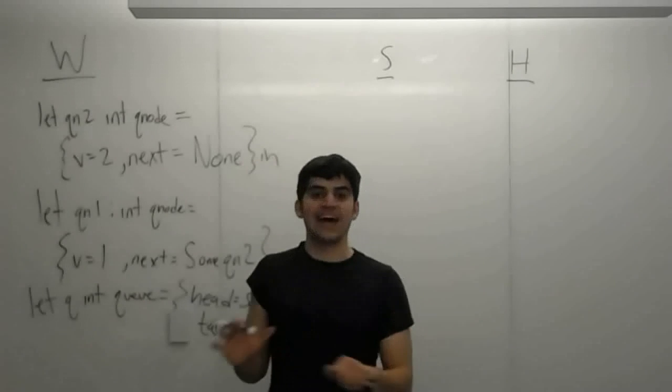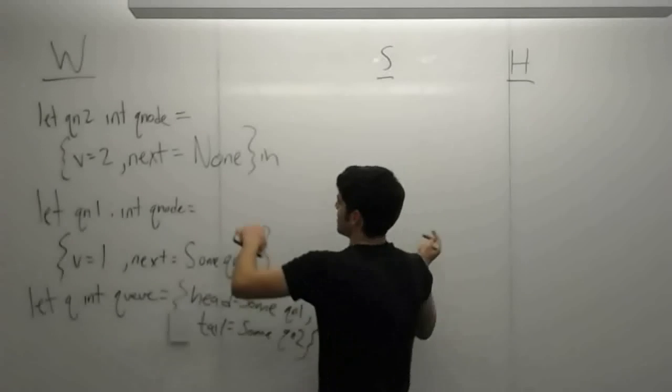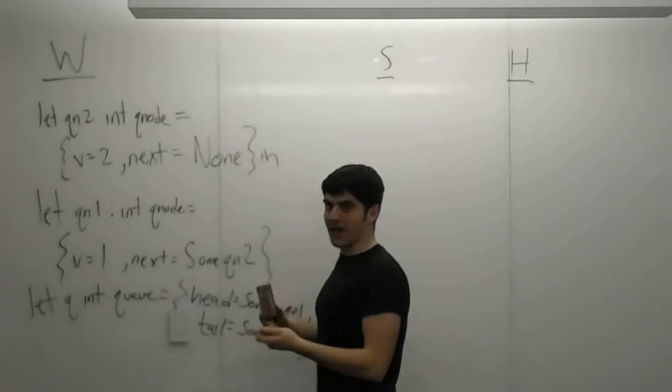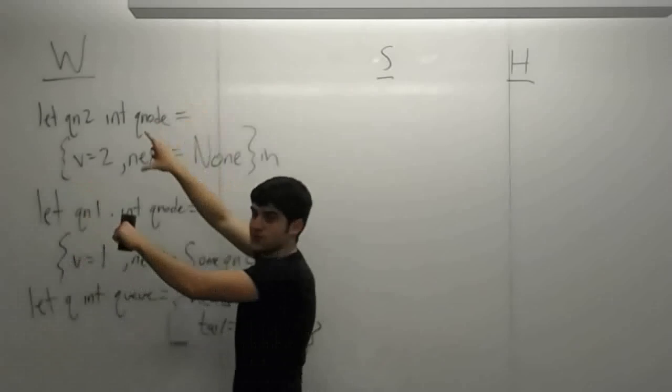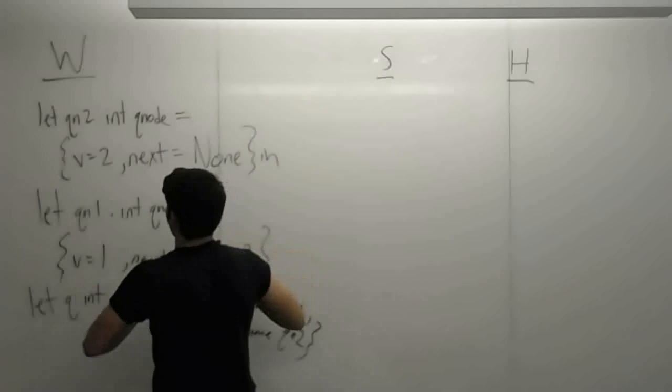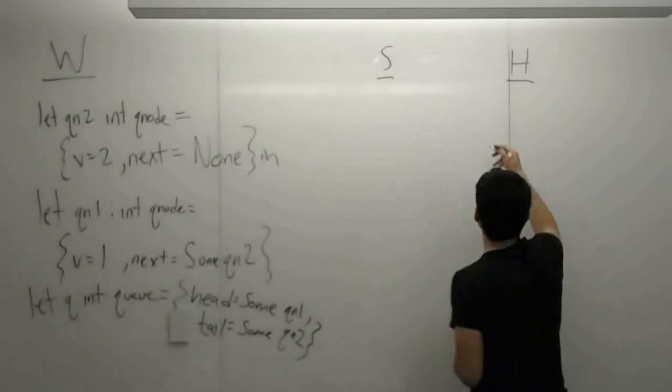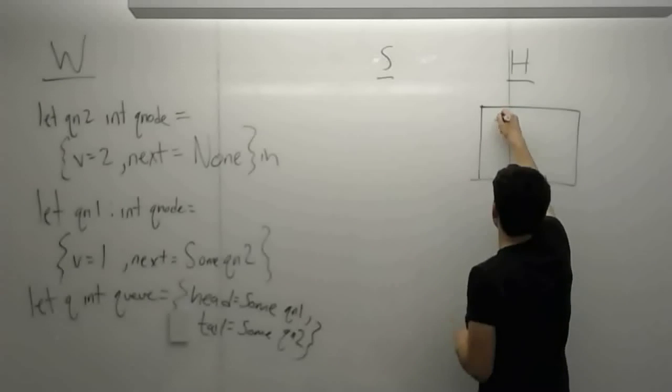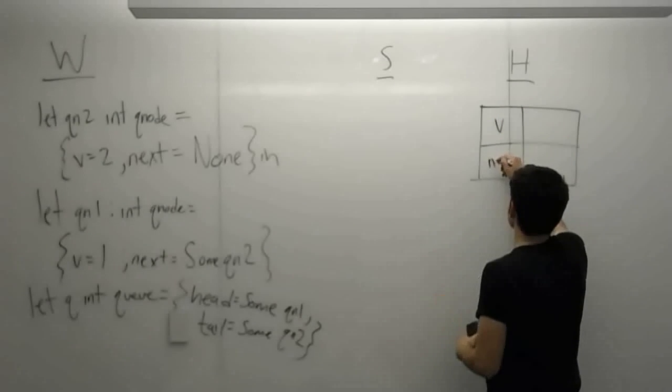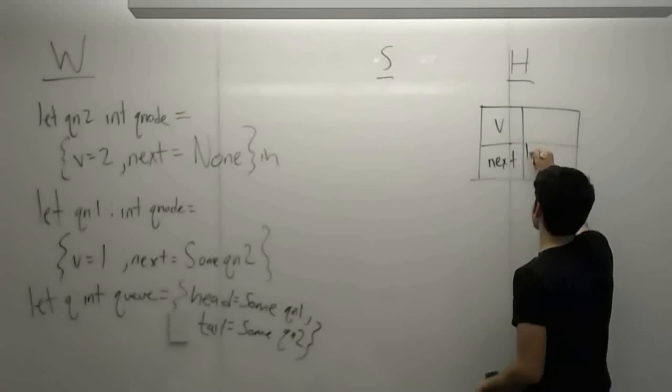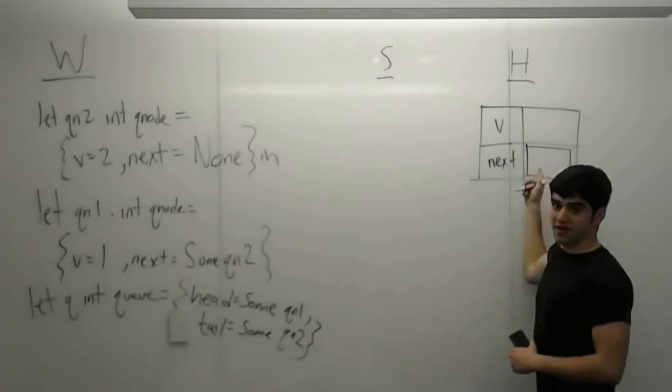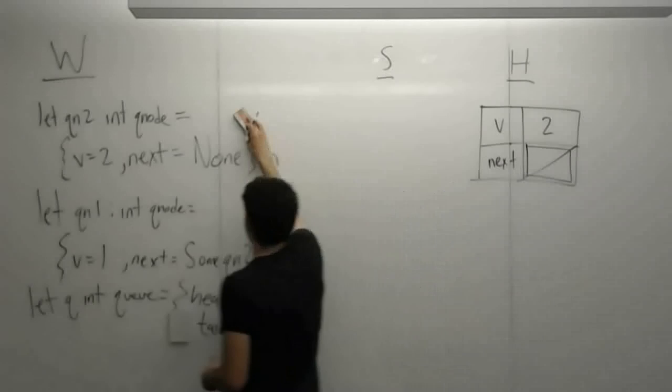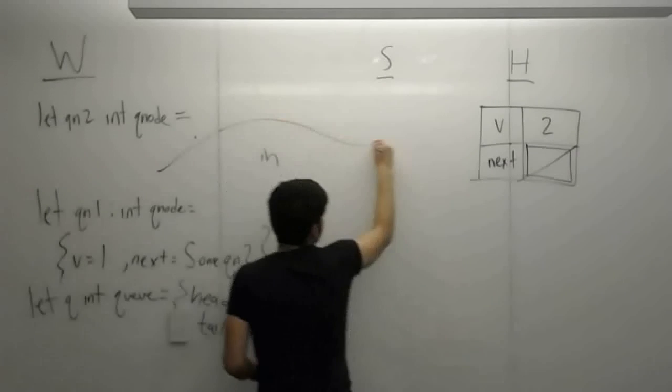So first thing that we have, we look at the leftmost ready expression. qn2, which is an int q node, be this. That's the leftmost ready expression. So what do we have to do? When is this ready? When whatever is after the equal sign is a value. So we need to get this to be a value. Well, we already saw how to work with this. This is going to be a double entry cell, this mutable record, we saw this before, with a v field and a next field. Next is mutable, so I need to put this double box in there. And so v is just two, and next is none. So I use the none shorthand.